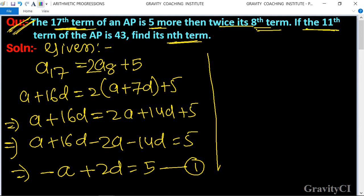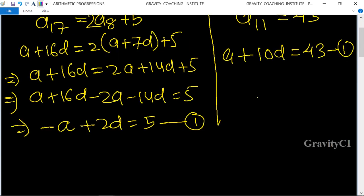If the 11th term of an AP is 43, so a₁₁ equals 43. We can write a₁₁ as a + 10d equals 43. This equation is the second.